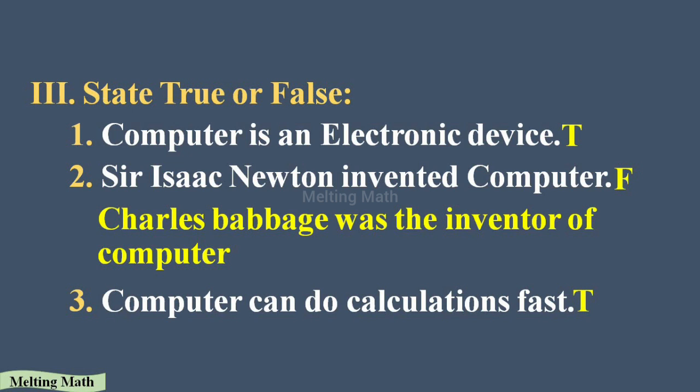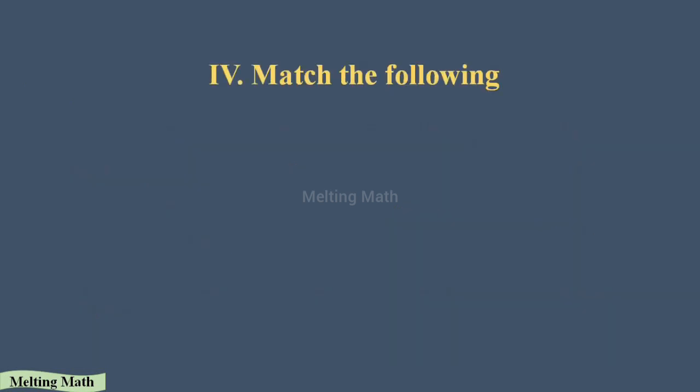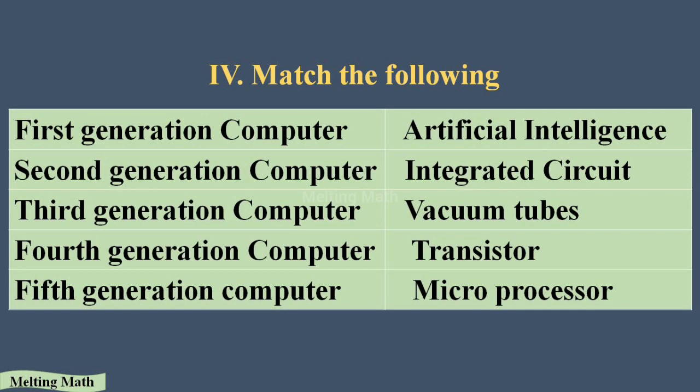Part D: Match the following. Here they give generations of computers and their processing devices. In the first generation computer, vacuum tubes were used as the processing component.